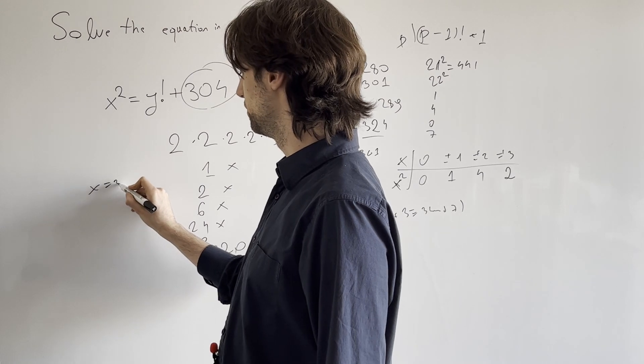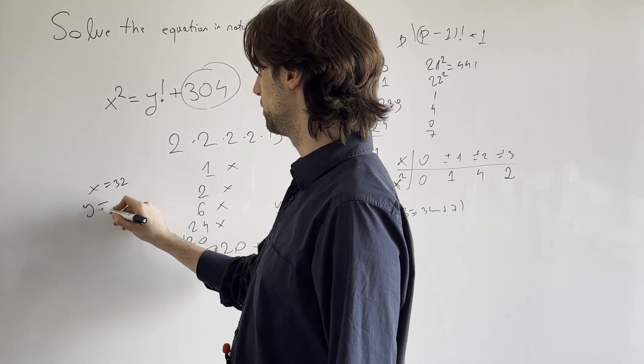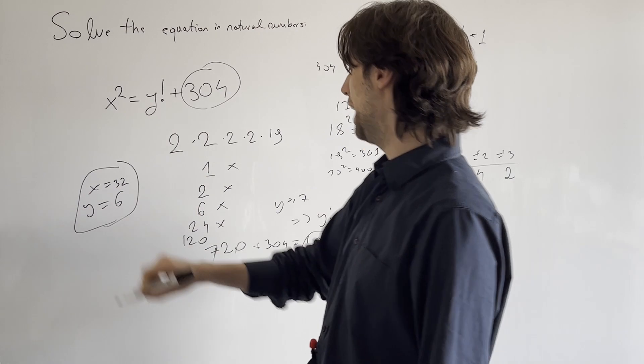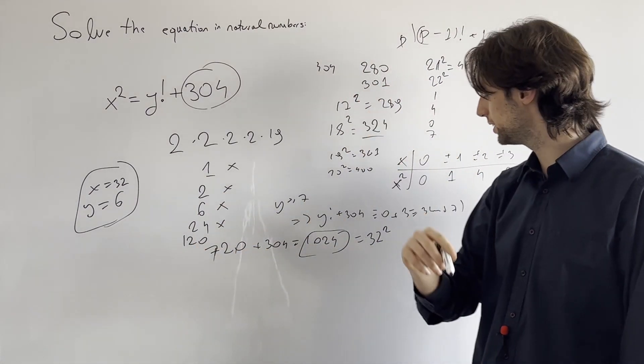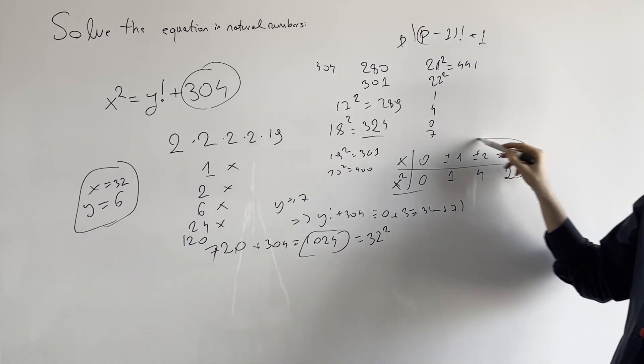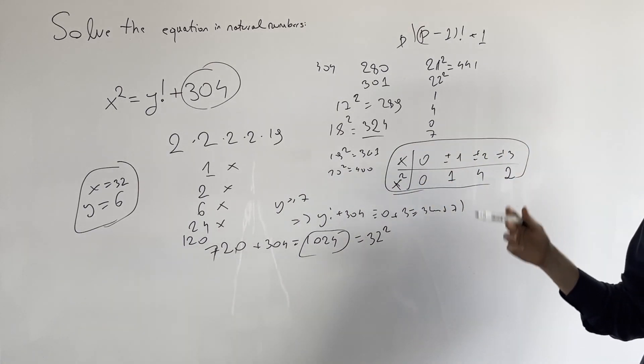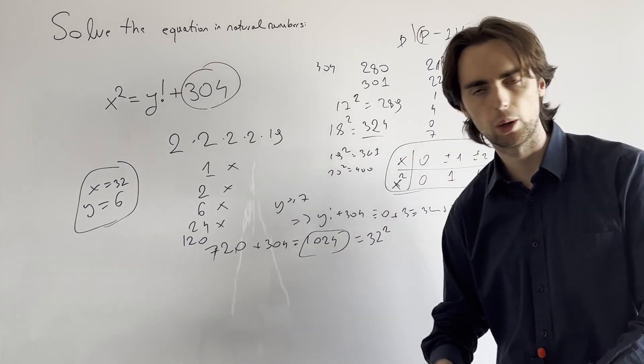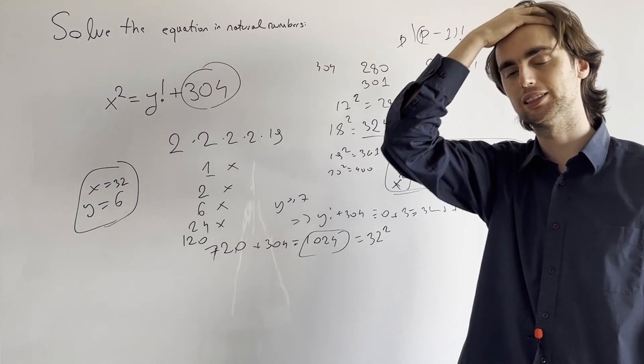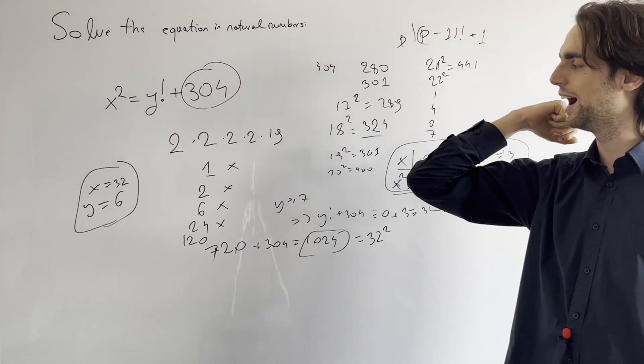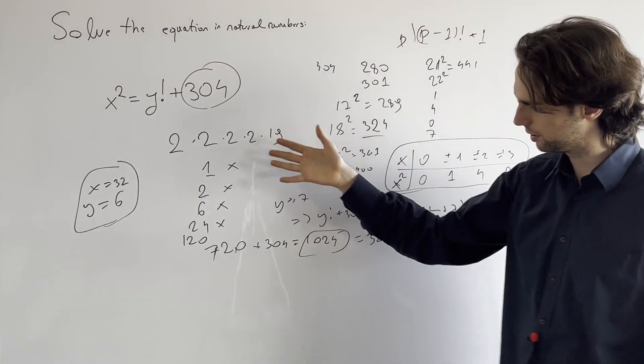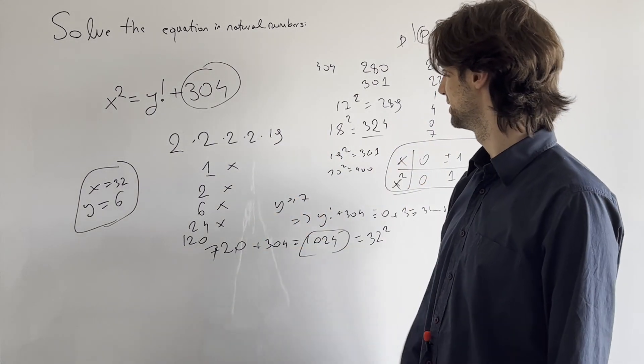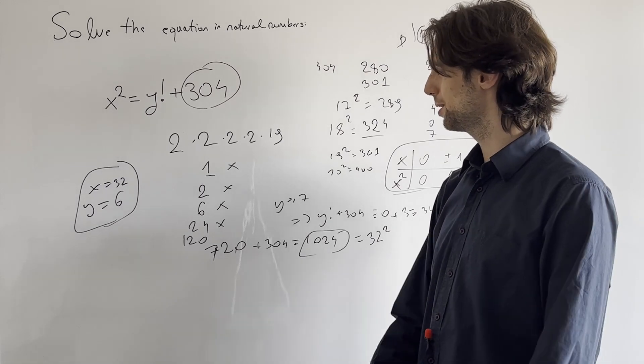So x equals 32, y equals 6 is a solution. And as we've checked, for y greater than or equal to 7, there cannot be any solution due to divisibility. Due to divisibility by looking at the remainders when x squared is divided by 7. And this finishes up our problem, right? We've checked everything up till then. Nothing works. And this finishes up the problem.